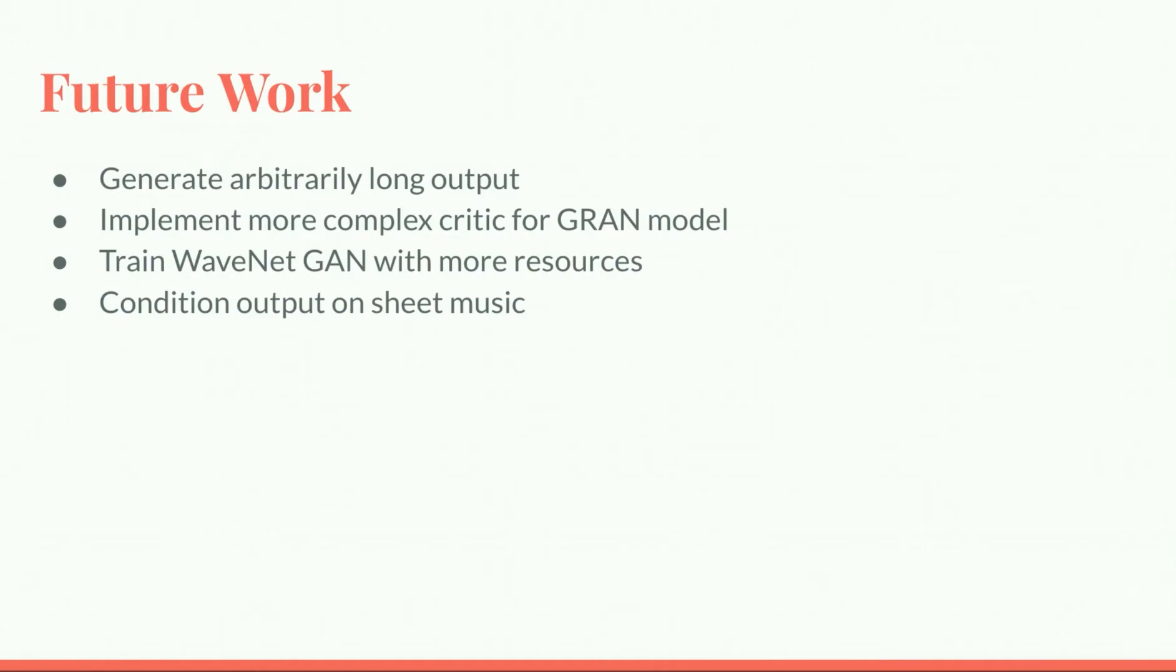We would also like to implement a more complex critic for the GAN model. We believe the critic is currently a limiting factor in the quality of the output that it can produce. The critic is a simple three-layer neural network, which is far simpler than the generator model. If the critic is not sophisticated enough to accurately rank the outputs of the generator, then the generator is not going to be able to make any progress.